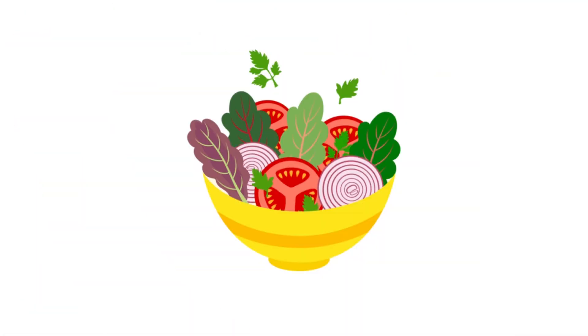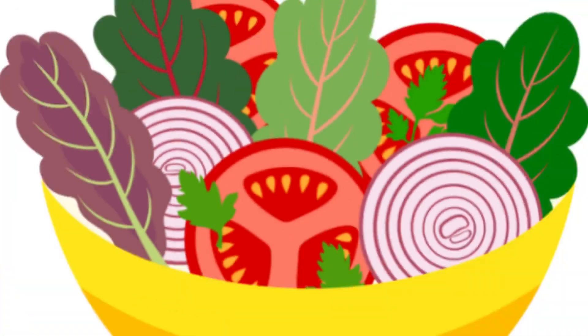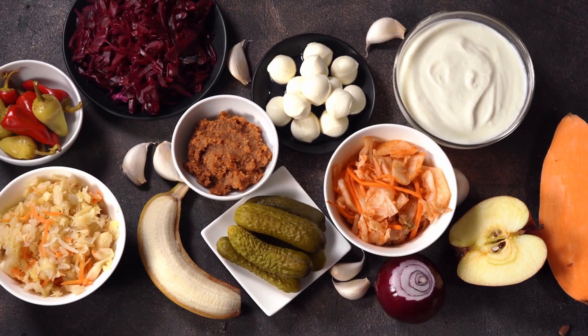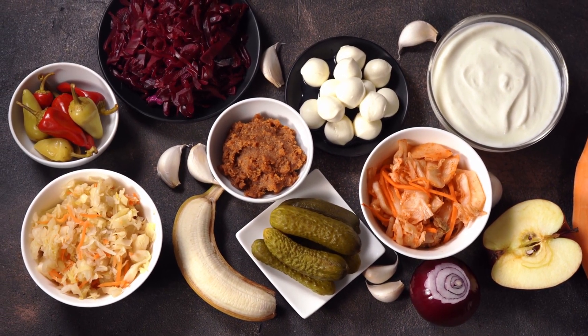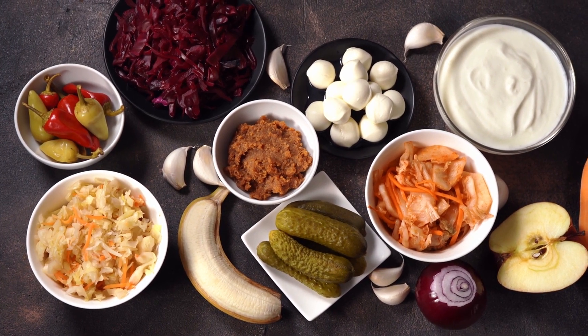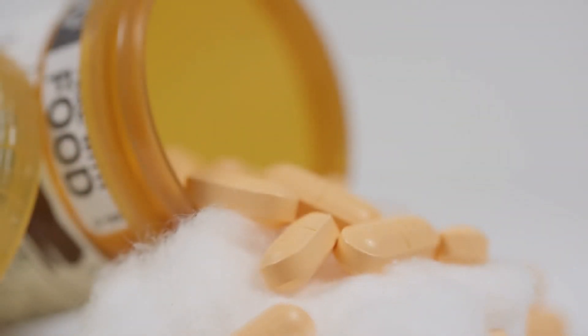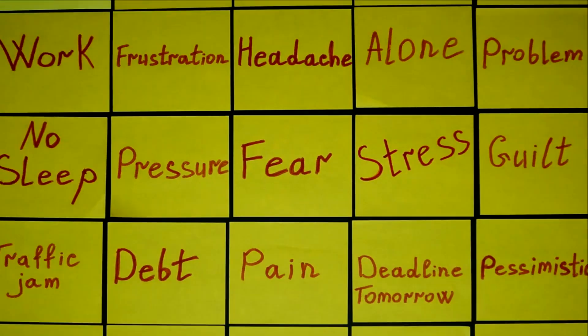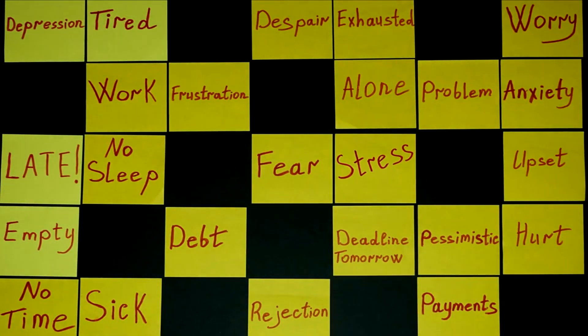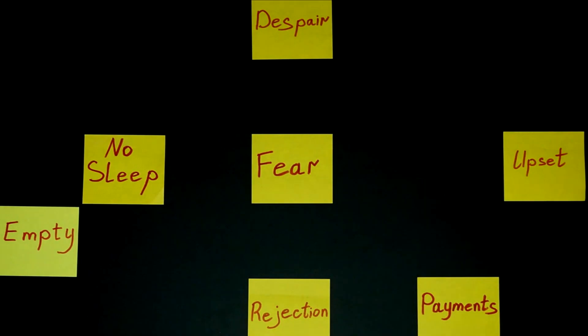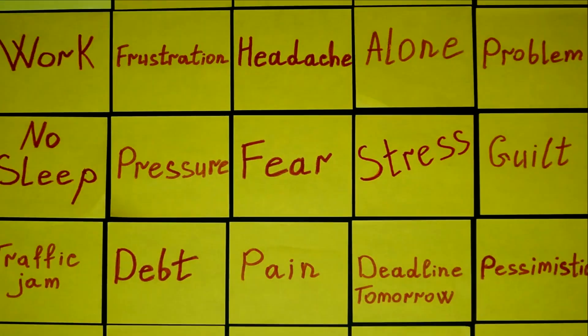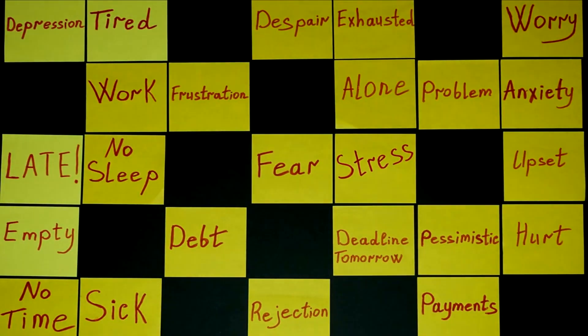One, eat a diverse diet. Consume a wide variety of nutrient-rich foods to support a diverse gut microbiota. Two, prebiotics and probiotics. Incorporate prebiotic-rich foods and probiotic supplements to nourish and replenish beneficial gut microbes. Three, minimize antibiotic use. Use antibiotics judiciously to preserve the balance of gut bacteria. Four, manage stress. Practice stress reduction techniques like meditation, yoga, or spending time in nature to maintain a balanced gut-brain axis.